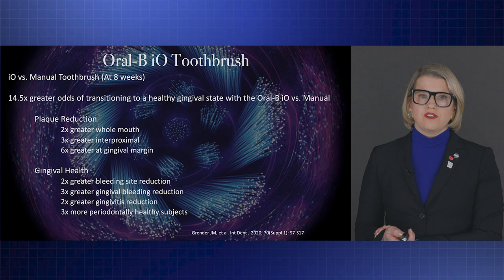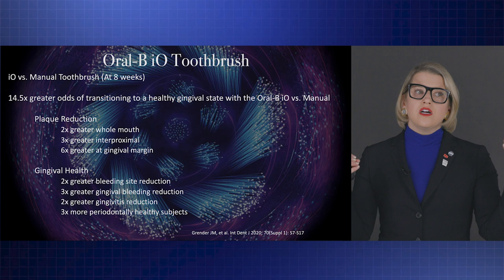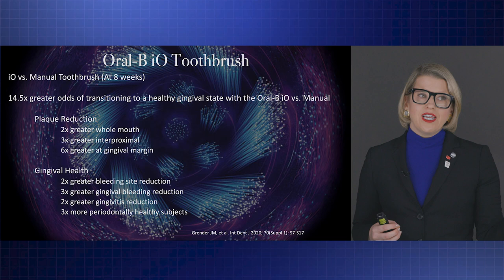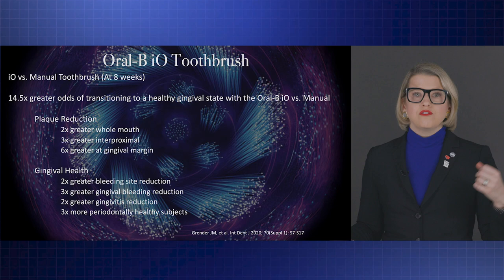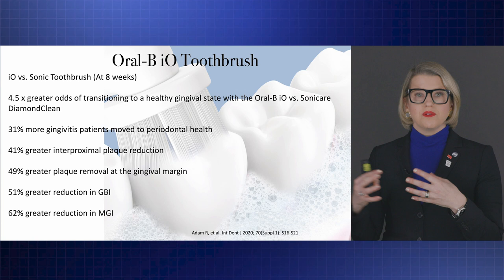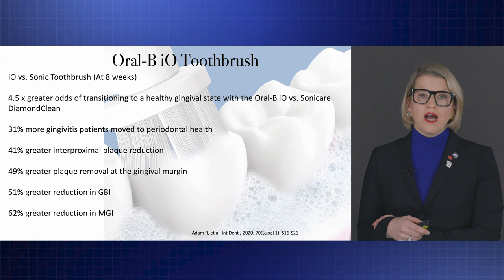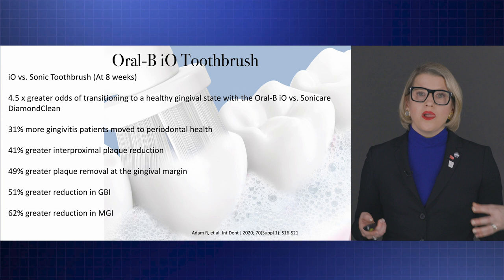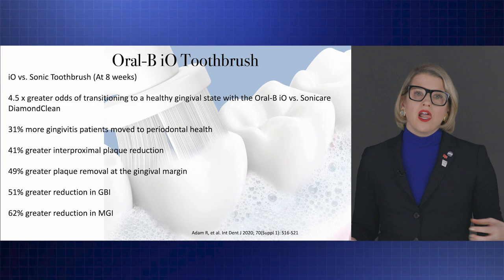Comparing this novel oscillating-rotating toothbrush to manual toothbrushes, we see 14.5 times greater odds of transitioning to less than 10% bleeding sites versus a manual toothbrush, including plaque reduction and improvement in gingival health over time. And comparing this novel oscillating-rotating toothbrush to a sonic toothbrush, we also see 4.5 times greater odds of transitioning to a healthy gingival state — even compared to other powered toothbrushes. So there are lots of options out there, and depending on patient needs, there may be distinct advantages to using a powered toothbrush — and even particular powered toothbrushes — based upon their risk profile.